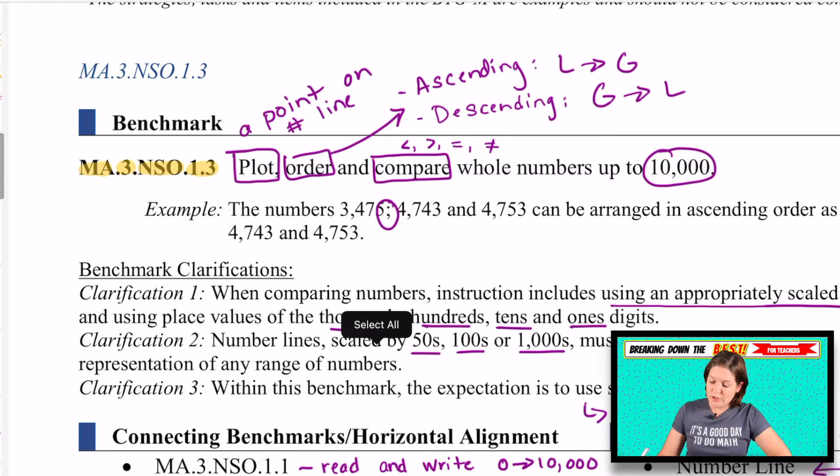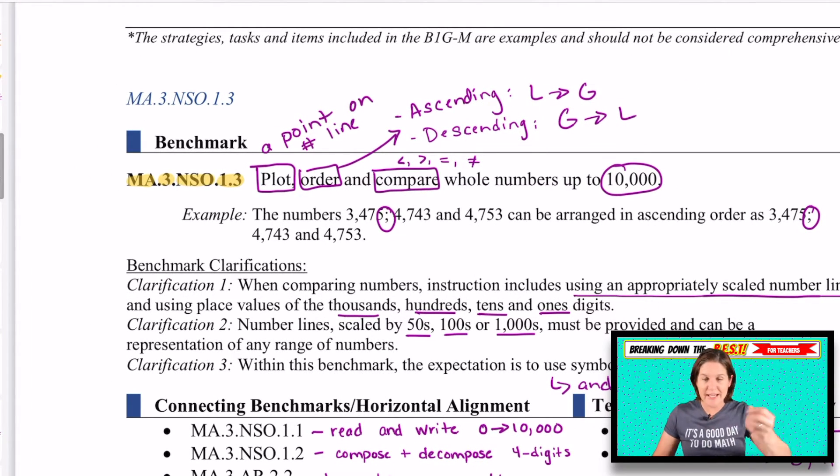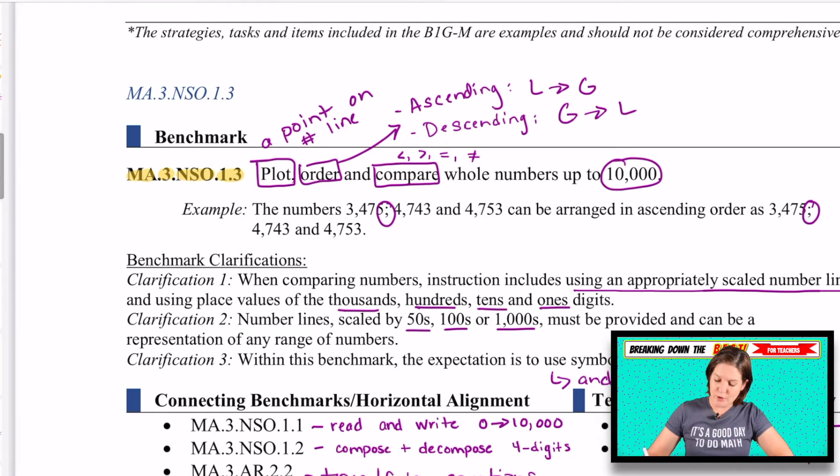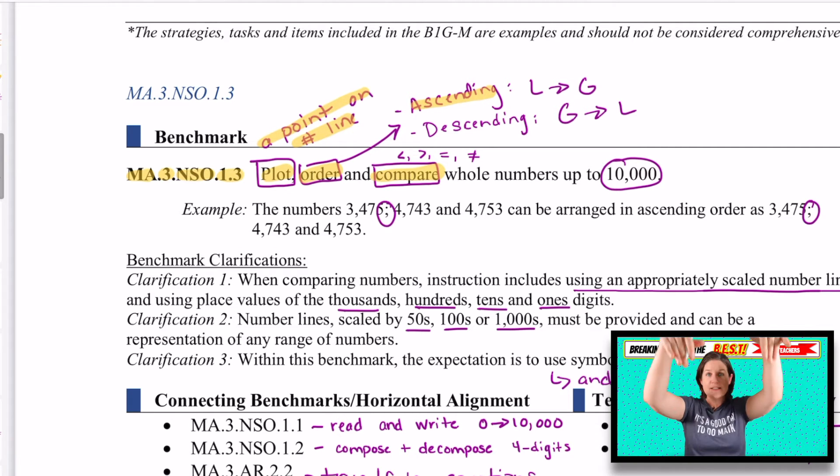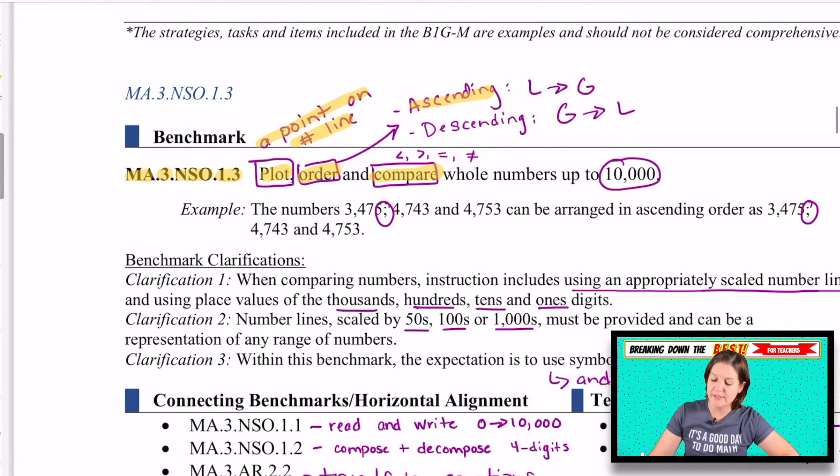Which happens to be MA.3.NSO.1.3. MA stands for math. Three means third grade. NSO stands for number, sense operations. That's our strand. And we've got 1.3 for our benchmark. So in this standard, it says to plot. That means plot a point on a number line. We're going to plot, order, and compare.